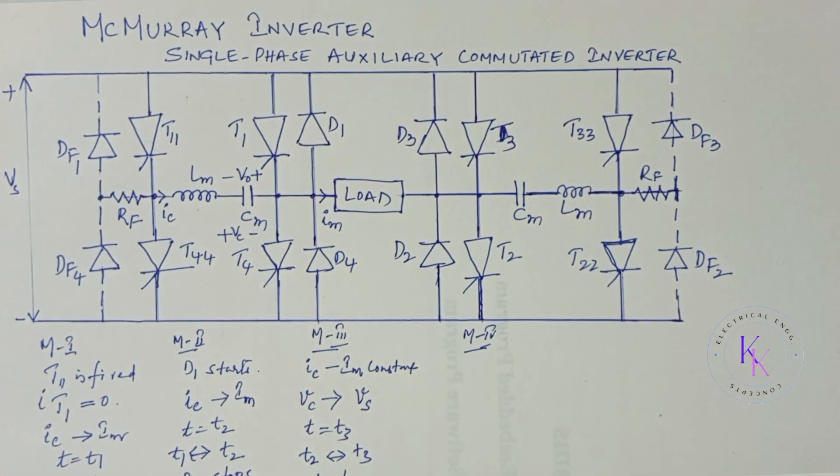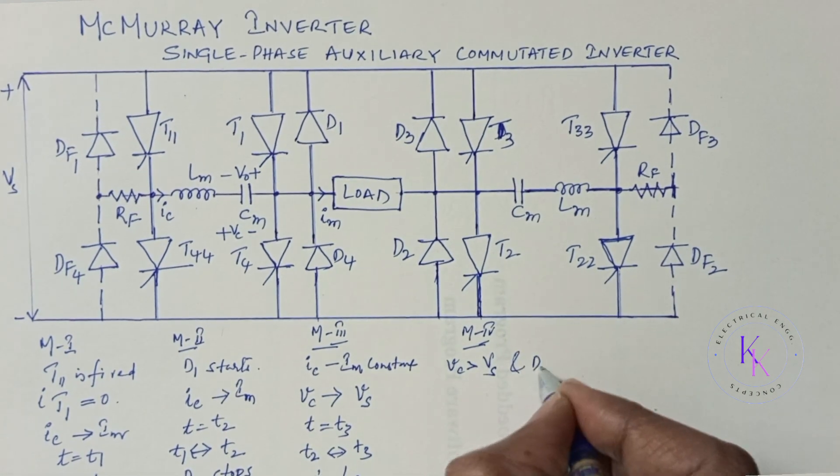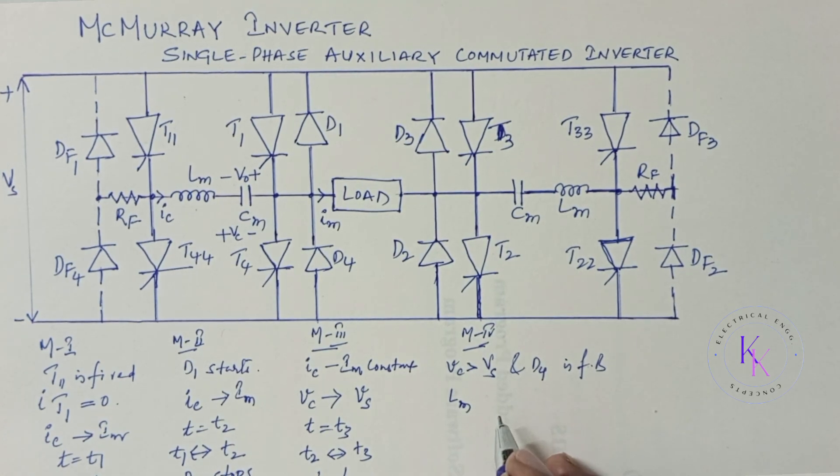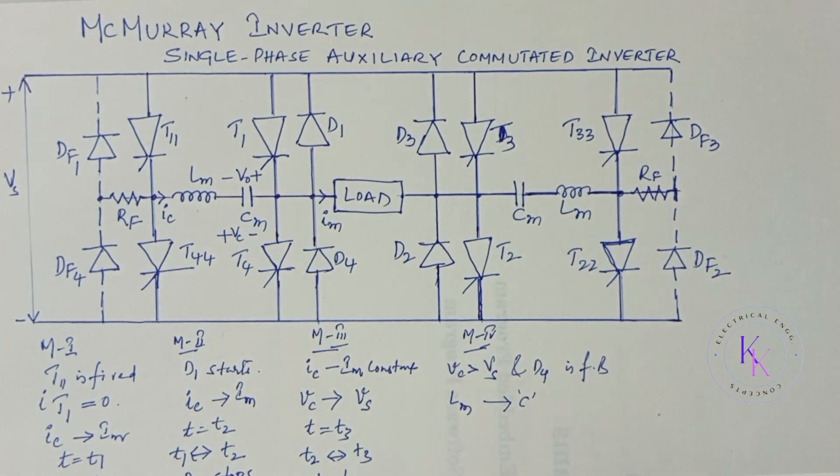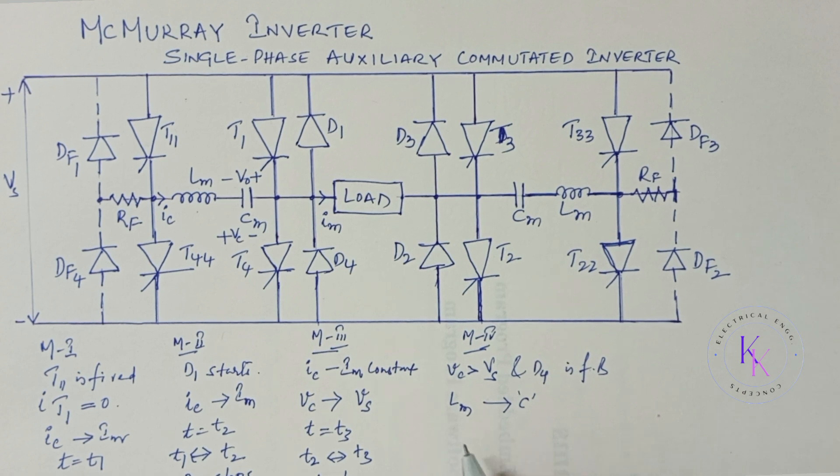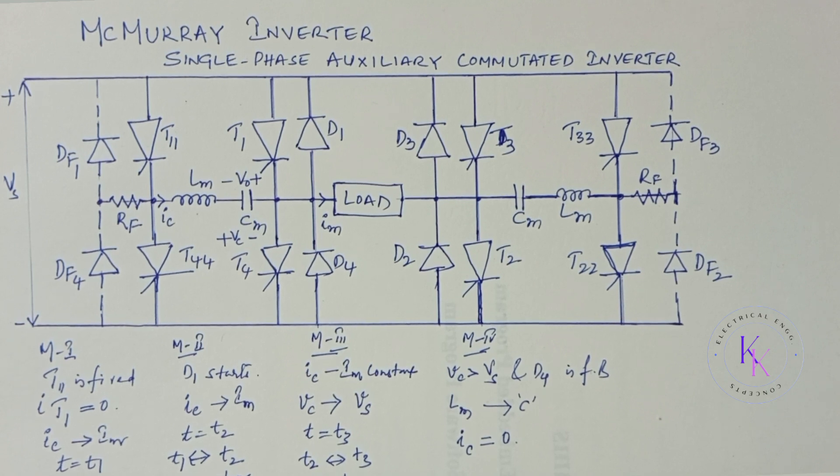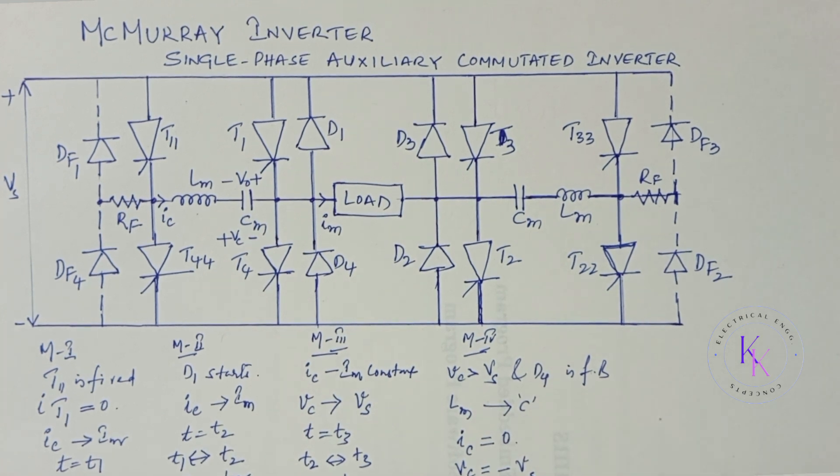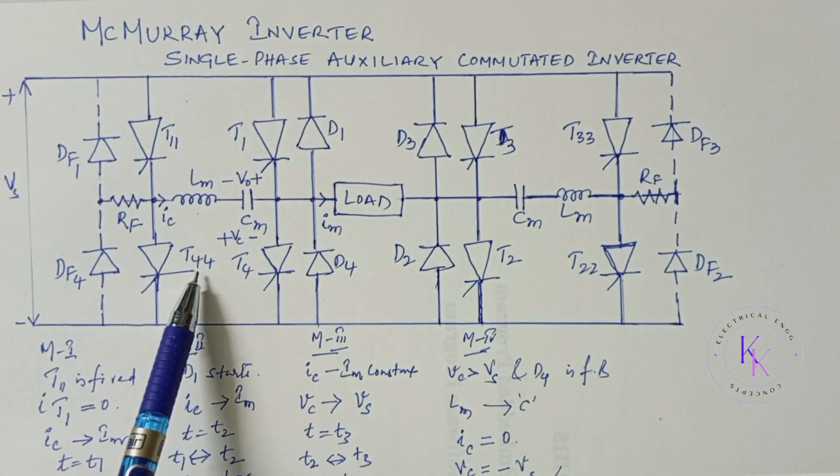Mode 4: This mode begins when the capacitor voltage tends to greater than Vs, that is VC is greater than Vs and D4 is forward biased. The energy stored in the inductor LM is transferred to the capacitor C, causing it to be overcharged with respect to the supply voltage Vs. This mode ends when the capacitor current IC falls to zero and the capacitor voltage is reversed to its original value, that is minus Vs. This capacitor is now ready to turn off T4. At the end of mode 4, the capacitor is ready to turn off the T4 if T4 is fired.